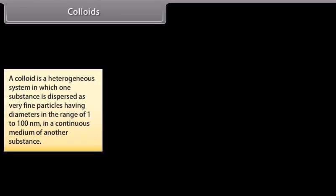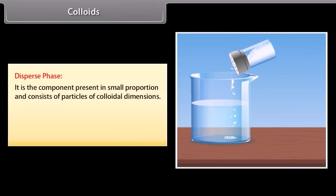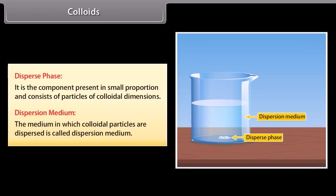Colloids: A colloid is a heterogeneous system in which one substance is dispersed as very fine particles having diameters in the range of 1 to 100 nanometers in a continuous medium of another substance. Examples include milk, shaving lather, jelly, and paint. A colloidal solution always consists of at least two phases: the disperse phase (the component present in small proportion with colloidal-dimension particles) and the dispersion medium (the medium in which colloidal particles are dispersed).